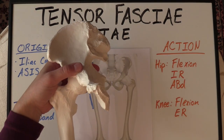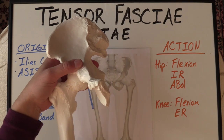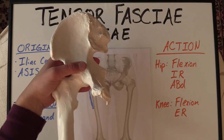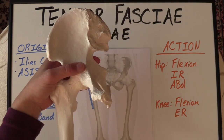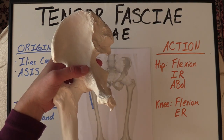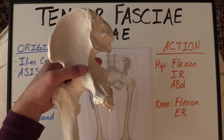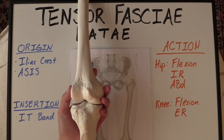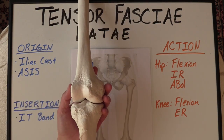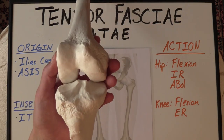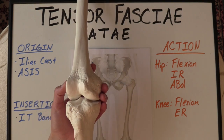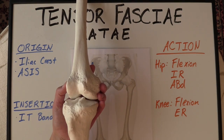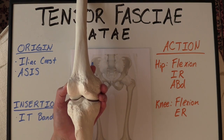The actions of the hip involve flexion, internal rotation, and abduction. Actions for the knee involve flexion and slight external rotation.